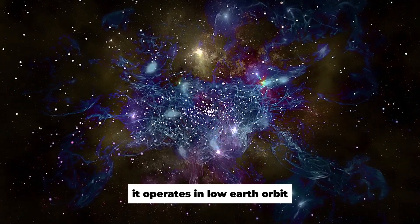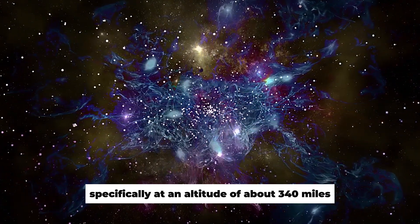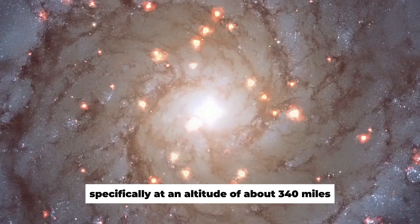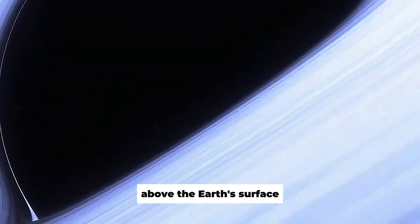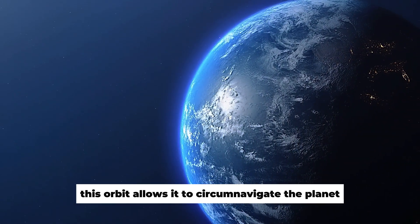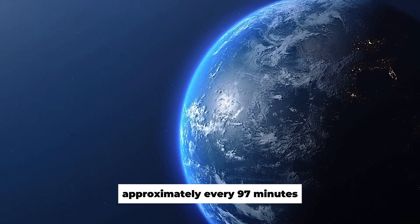It operates in low Earth orbit, specifically at an altitude of about 340 miles or over 550 kilometers above Earth's surface. This orbit allows it to circumnavigate the planet approximately every 97 minutes.